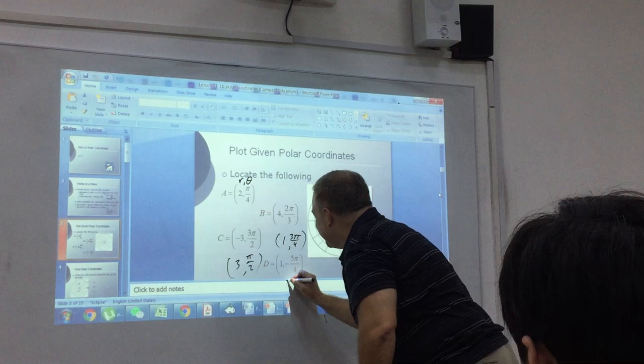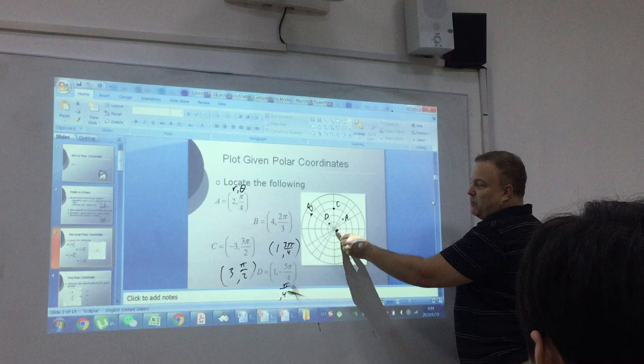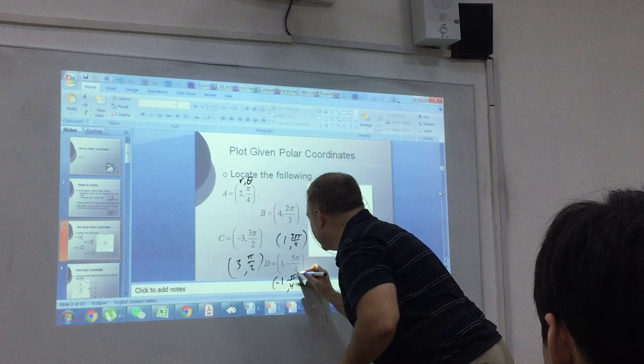Oops. Negative pi over 4. And if the angle is negative pi over 4, what do you think the R would be? Negative 1. Negative 1.